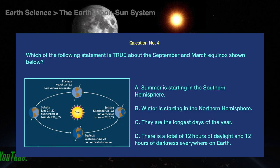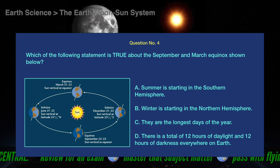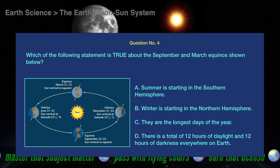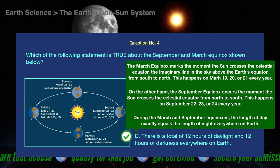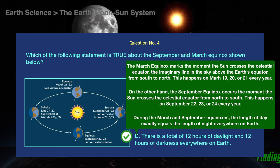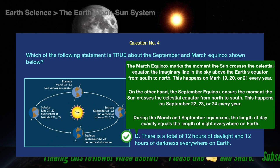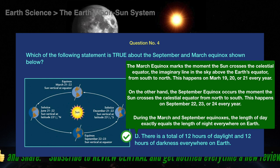Question number 4. Which of the following statements is true about the September and March equinoxes? A. Summer is starting in the Southern Hemisphere. B. Winter is starting in the Northern Hemisphere. C. They are the longest days of the year. D. There is a total of 12 hours of daylight and 12 hours of darkness everywhere on Earth. The correct answer is D. The March equinox marks the moment the Sun crosses the celestial equator from south to north, happening on March 19, 20, or 21 every year. The September equinox occurs when the Sun crosses the celestial equator from north to south, on September 22, 23, or 24 every year. During both equinoxes, the length of day exactly equals the length of night everywhere on Earth.